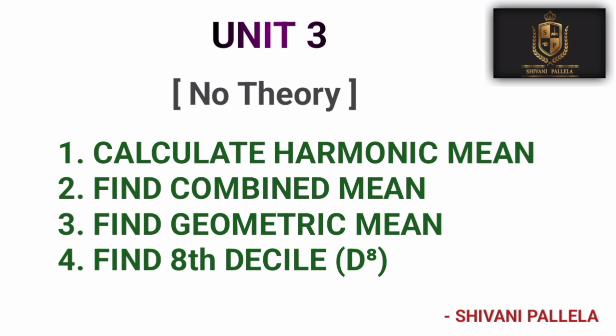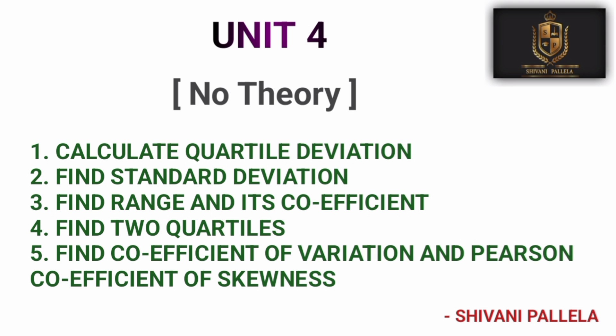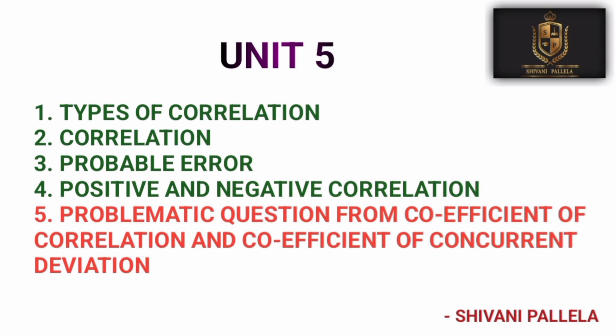From Unit Three onwards, there will be no theory questions at all — all problematic only. For Part A from Unit Three, they may ask you to calculate harmonic mean, geometric mean, combined mean. For Unit Four in Part A, they will ask to calculate quartile deviation. For Unit Five, the theory questions include types of correlation, correlation, probable error, and positive and negative correlation. Problematic questions from Unit Five in Part A will be coefficient of concurrent deviation or coefficient of correlation.